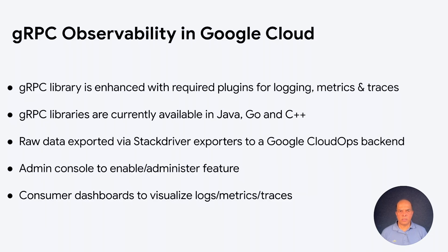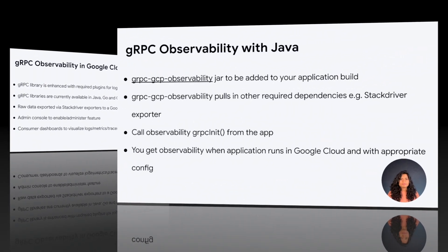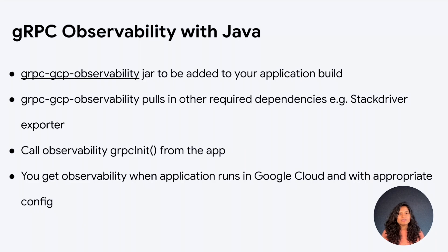At this point, I'm going to hand it over to Vindya for the rest of this presentation. Let's see how this works with gRPC Java. There is a Java artifact called gRPC GCP observability which you use in your application. This artifact pulls in all the dependencies required to produce and export logs, metrics, and traces. In your Java app, you call the observability gRPC init function at the beginning. When the application is run in Google Cloud and the appropriate configuration is provided, it automatically sends the required raw data to the Google Cloud Ops backend. Just by adding a line to your application, you have observability into your services. It's that easy.